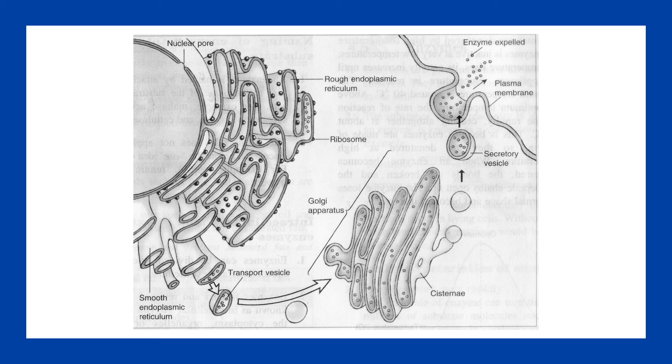And it'll then fuse, this vesicle will then fuse with a Golgi body. And the Golgi body is where things are packaged for secretion. And also, there'll be further modification and further folding into its tertiary structure, which is the 3D structure of the enzyme. And once it's gone through the Golgi body, it'll bud off that in a vesicle and go towards the cell surface membrane.